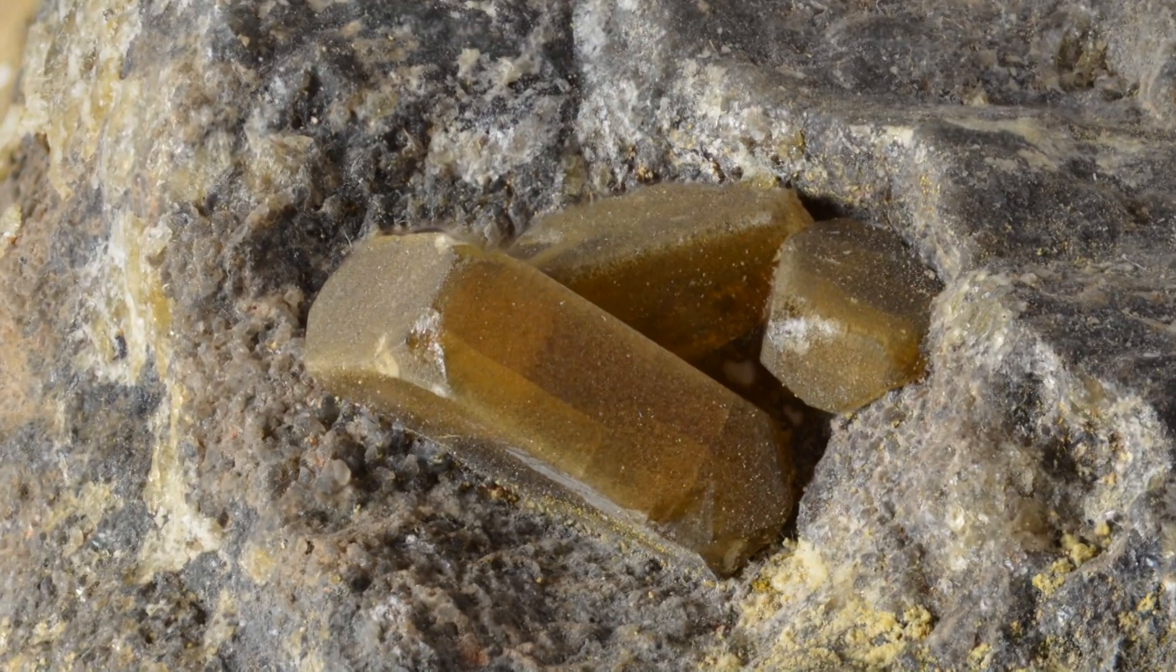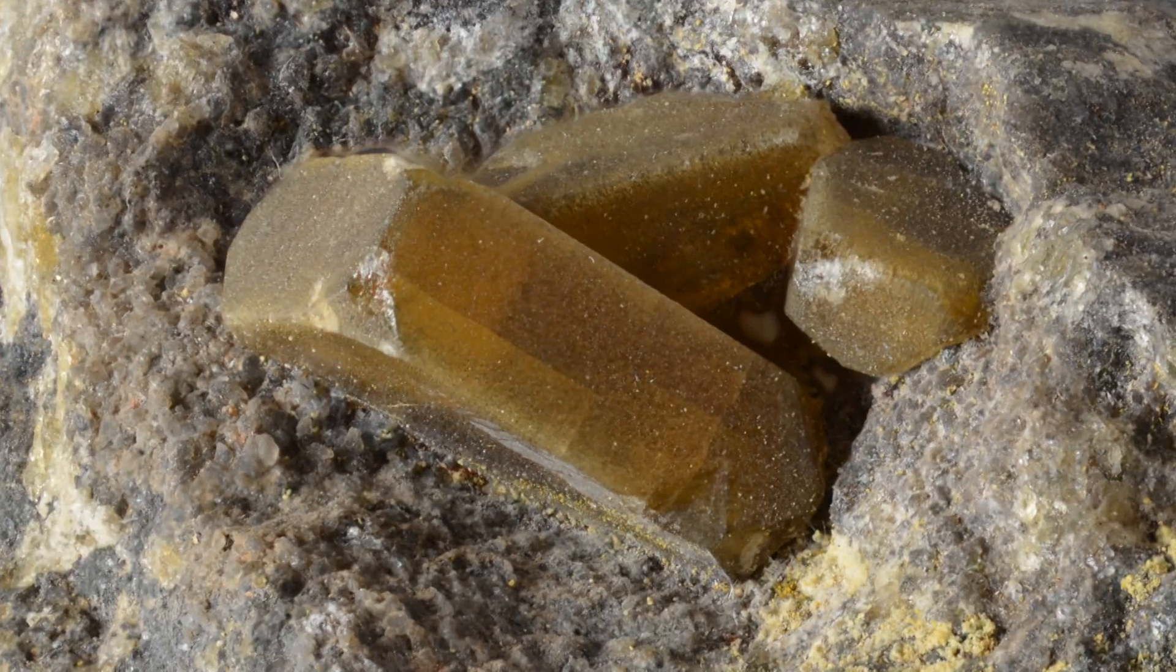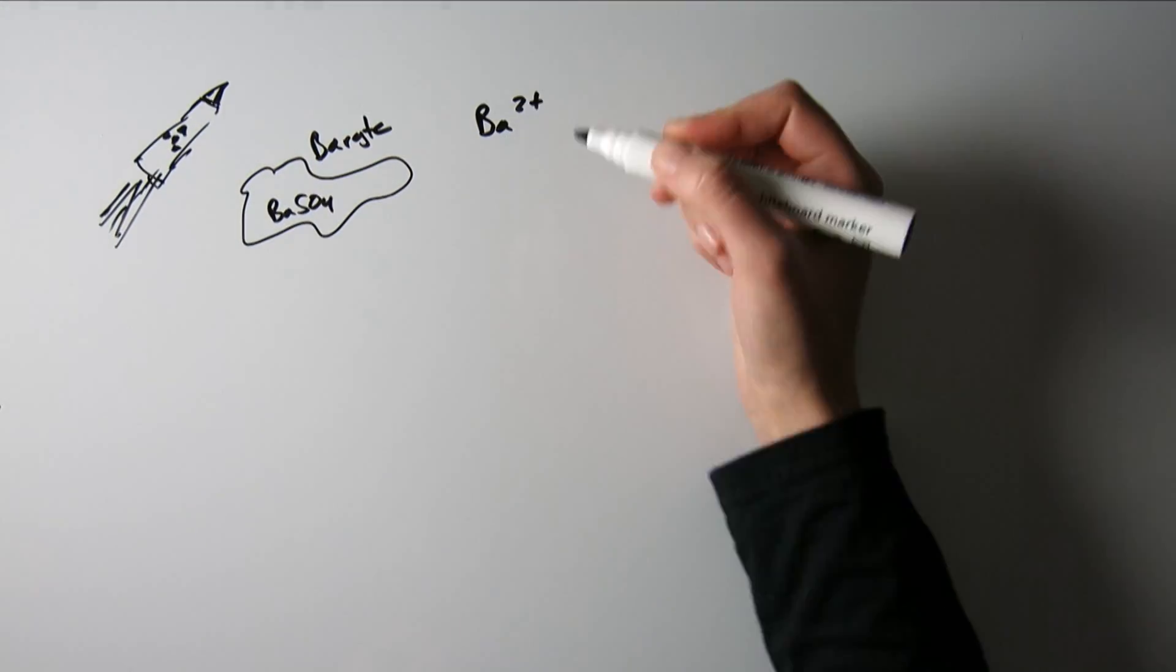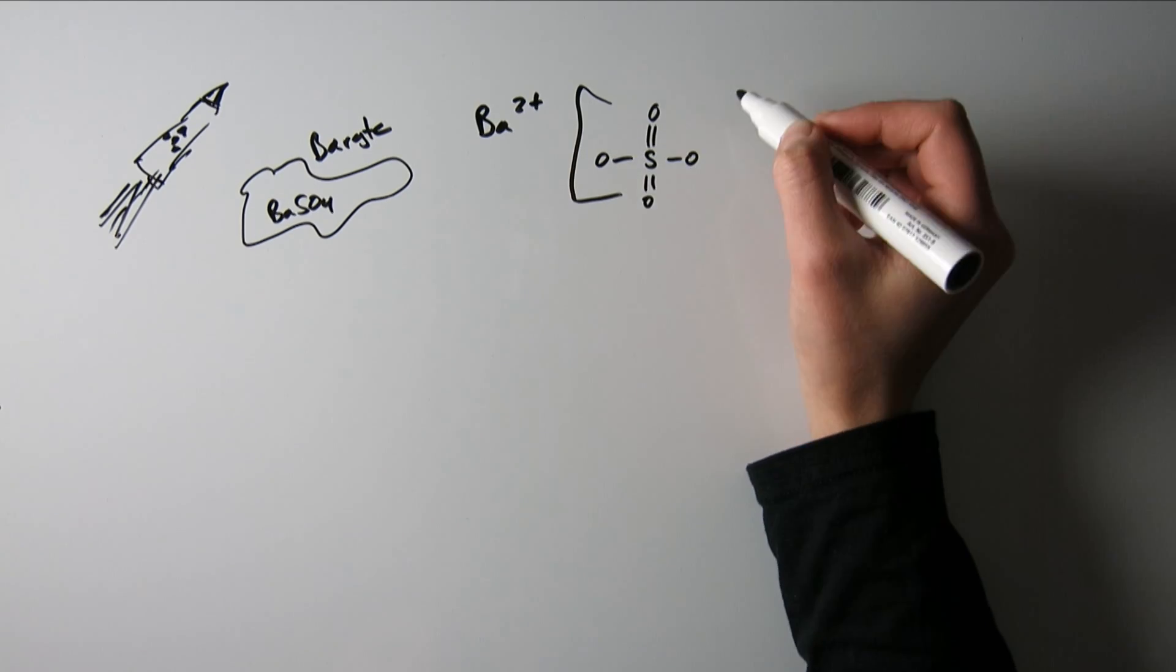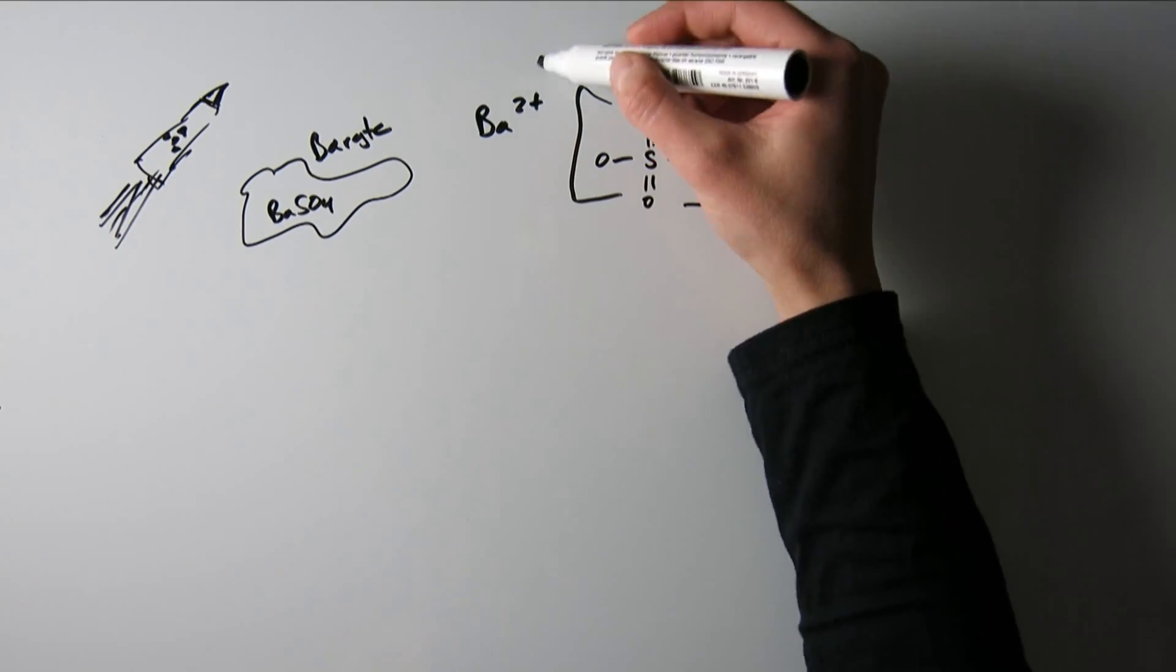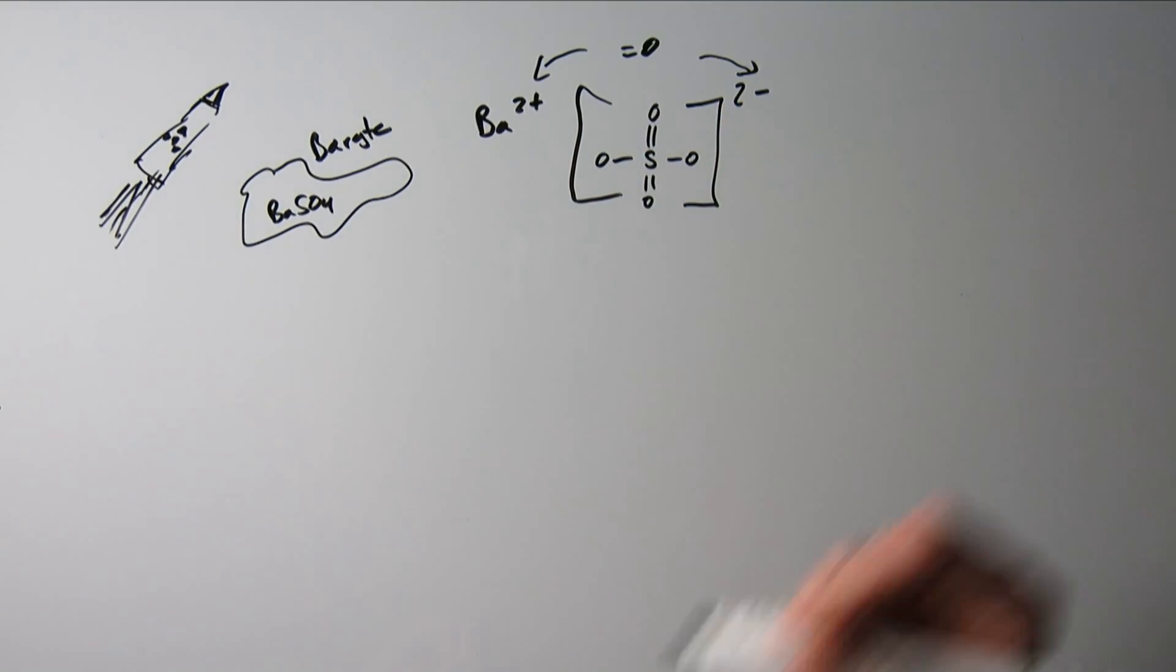This is what the stuff looks like, but what actually makes it radioactive? Barite is barium sulfate, so a barium atom with a charge of plus two and a sulfate molecule with a charge of minus two, so they just get together for some electron sharing fun.